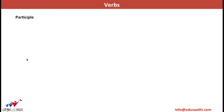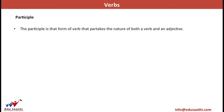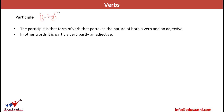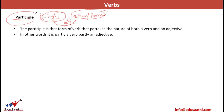Let us discuss the concept of participle. A participle is that form of the verb that partakes the nature of both a verb and an adjective. In other words, a participle is any verb that acts as an adjective. Any verb that ends in -ing and is acting to qualify a noun or a pronoun — telling you the quality of a noun or pronoun — becomes a participle. Why? Because -ing makes it a verb, and since it is qualifying a noun or pronoun, it acts as an adjective. So it becomes a participle.